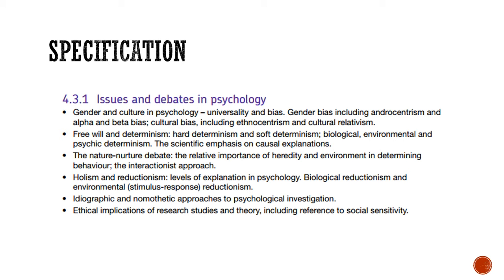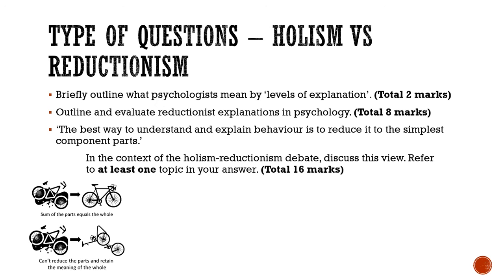For levels of explanation, biological reductionism, and environmental reductionism, you need to know AO1 and AO3 — you need to describe each one, give examples, and evaluate. Example exam questions include: briefly outline what psychologists mean by levels of explanation for two marks; outline and evaluate reductionist explanations in psychology, where you'd explain reductionism, give examples, and evaluate.